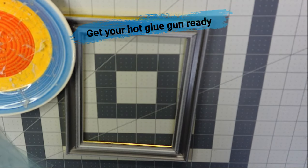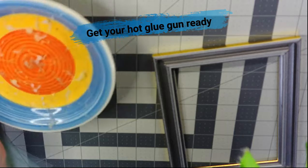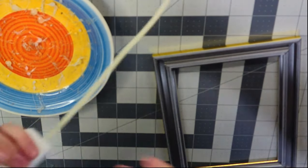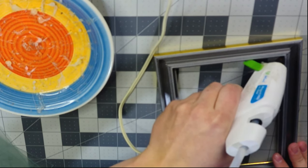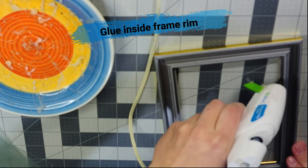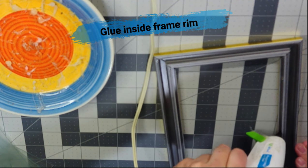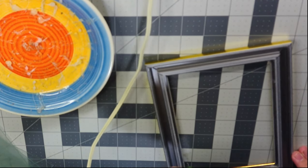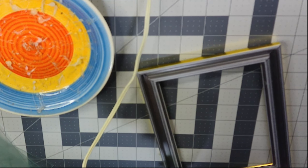Now we are going to move the other frames to the side and bring over our hot glue gun and get it ready by plugging it in. Once it's ready to go, then you can start gluing the inside rim of the frame. This will be for when we glue the glass into the frame.